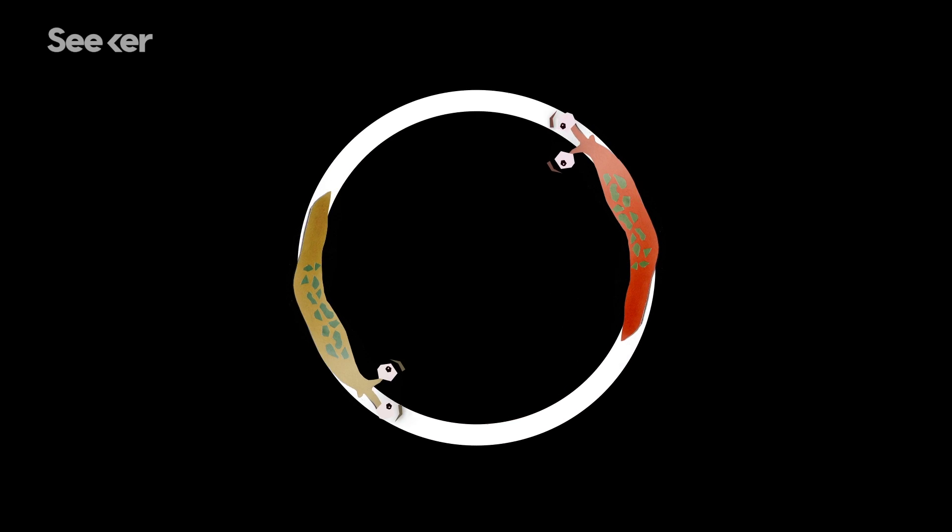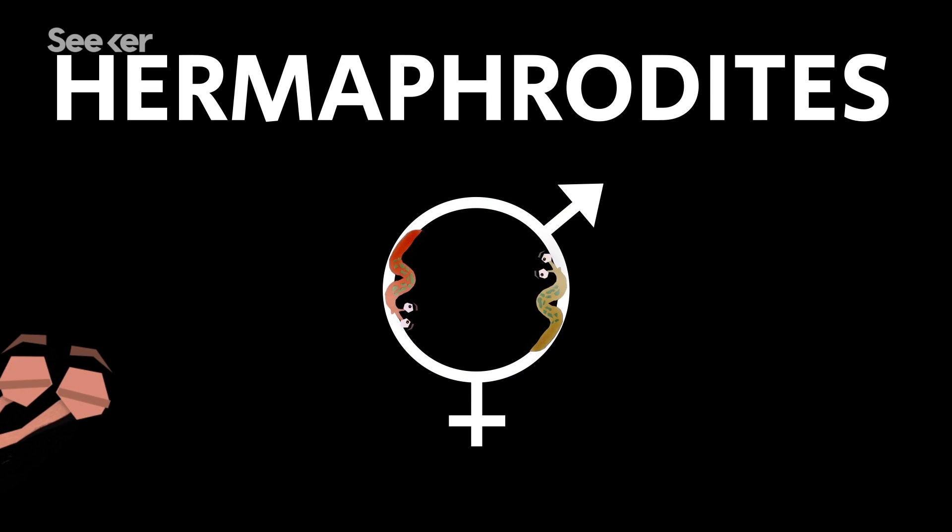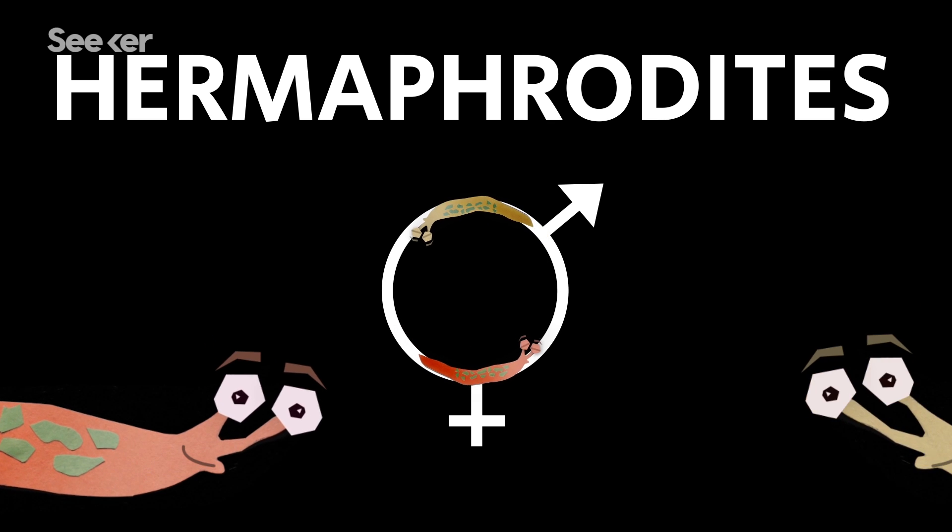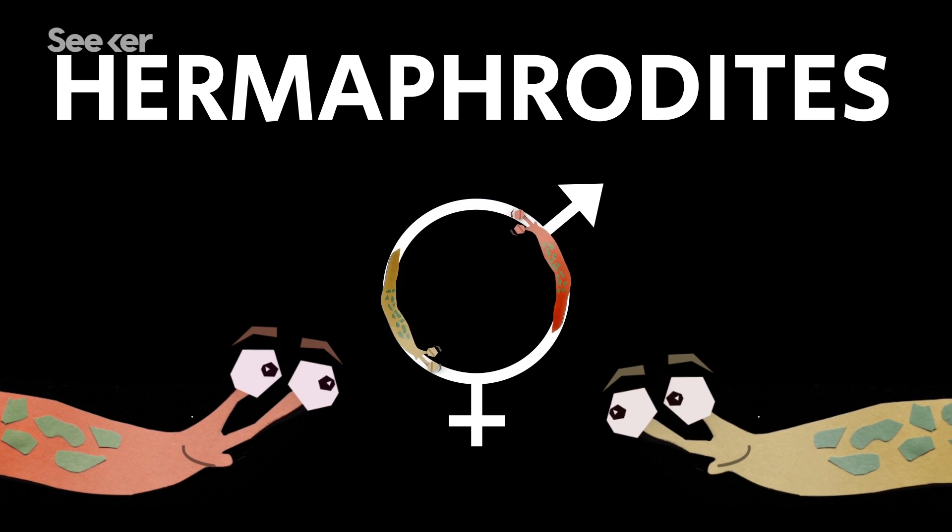First, you should know that terrestrial slugs are hermaphrodites, so they're capable of fertilizing themselves, but they also have the option to mate with a partner.